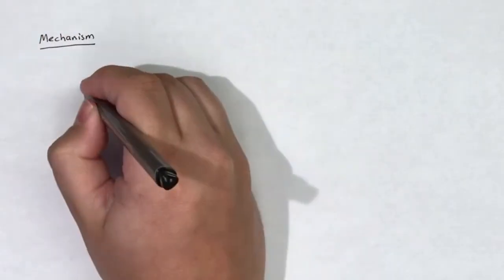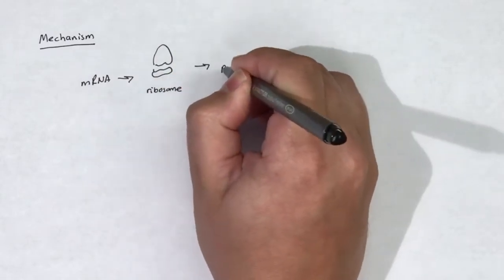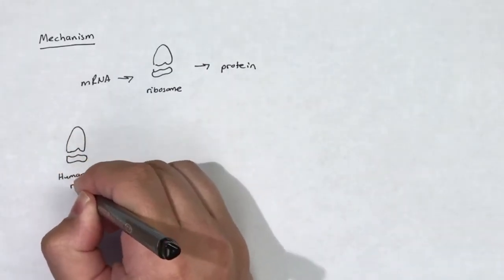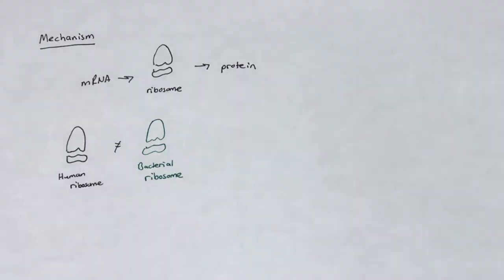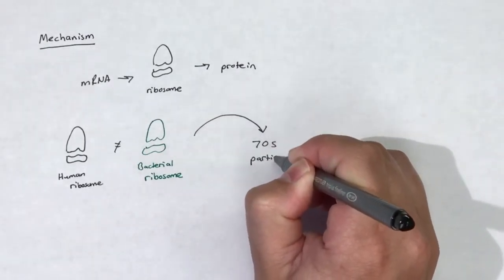Proteins are essential for all cells to function and survive. Ribosomes play an essential role in the translation of mRNA into proteins. Bacterial ribosomes are different than human ribosomes as they contain different ribosomal subunits. Protein synthesis inhibitors take advantage of this difference.